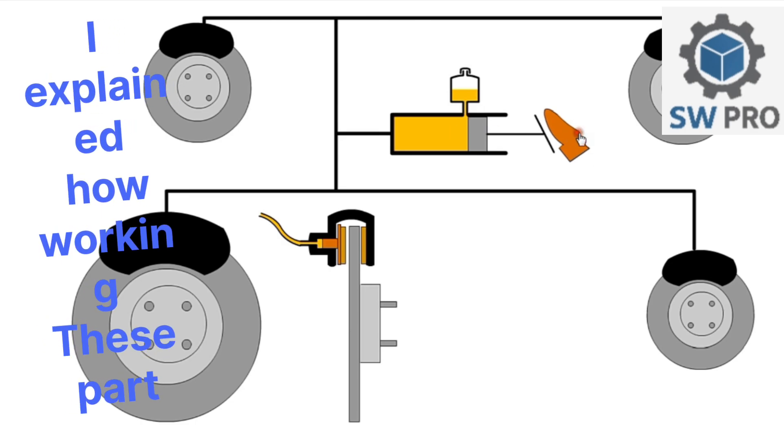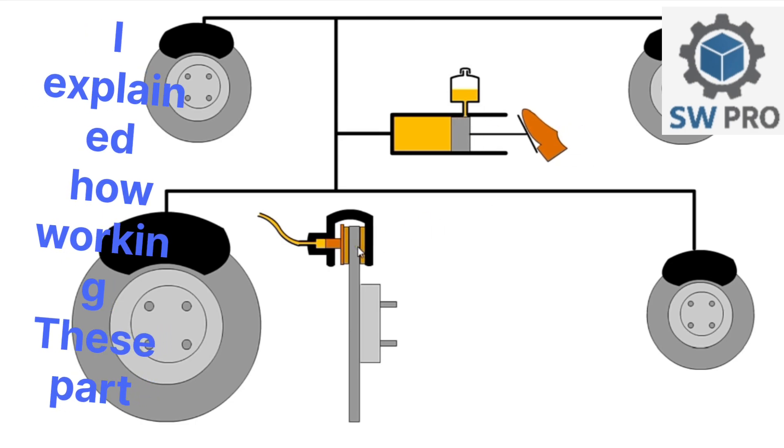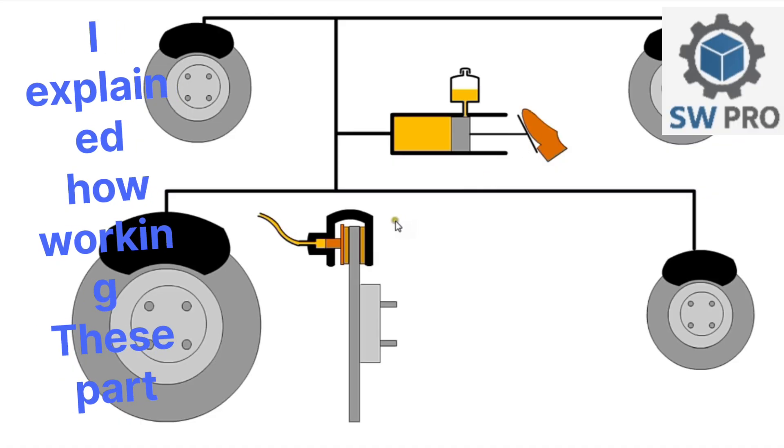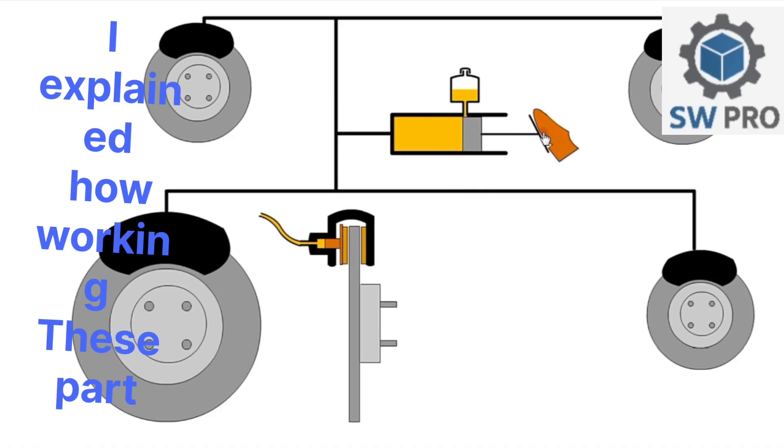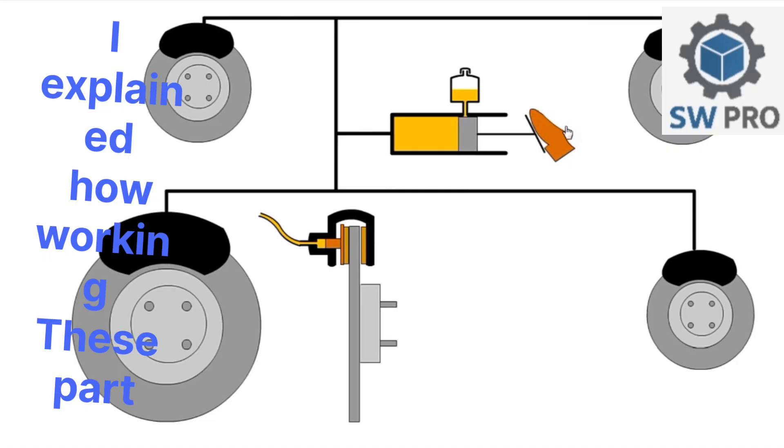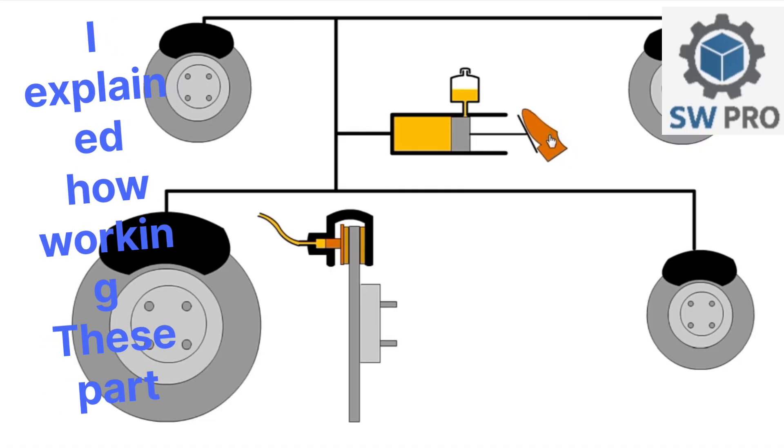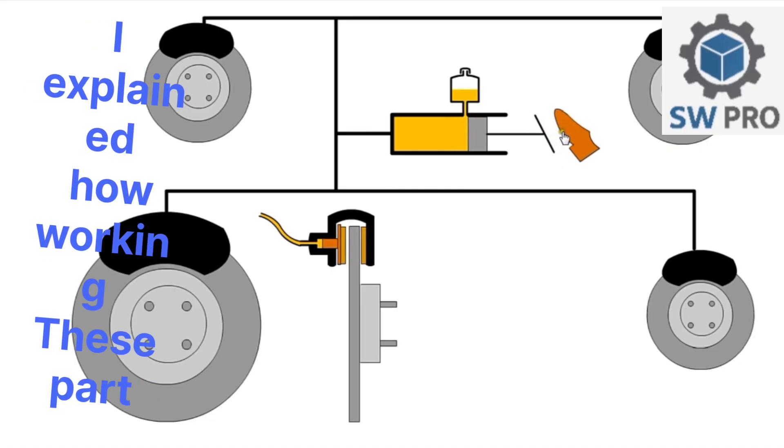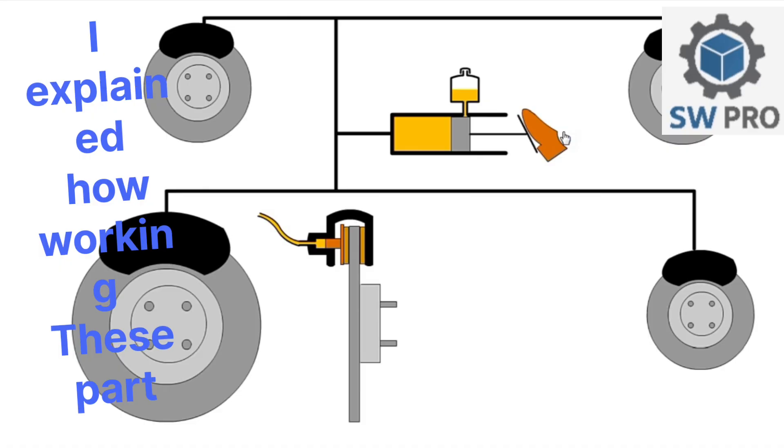A reservoir provides a supply of oil to the master cylinder. When the brake is pressed, the piston pressurizes the oil and activates the wheel chambers, clamping the wheel disc between the pads, thus slowing down the wheel rotation.